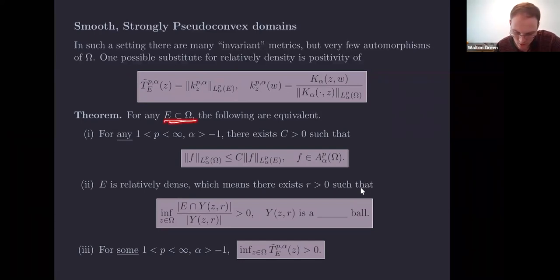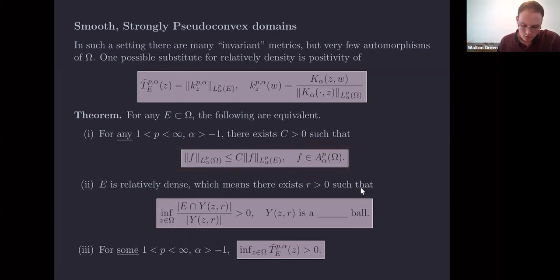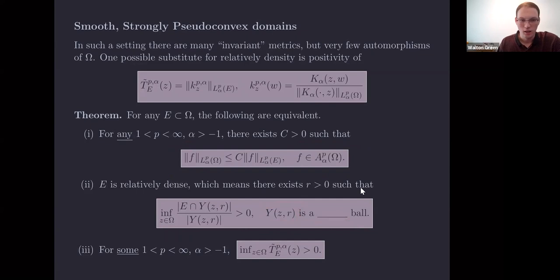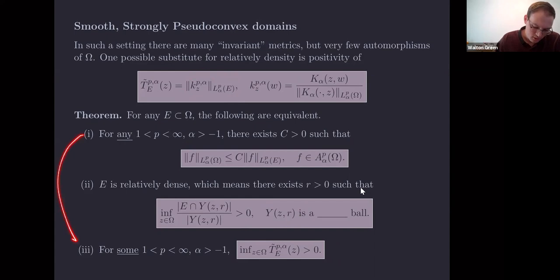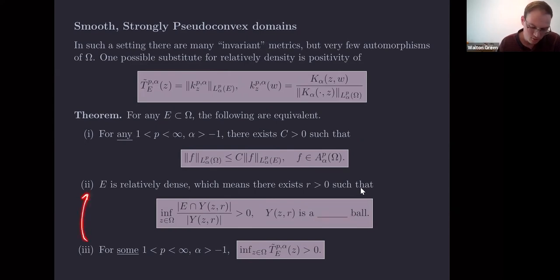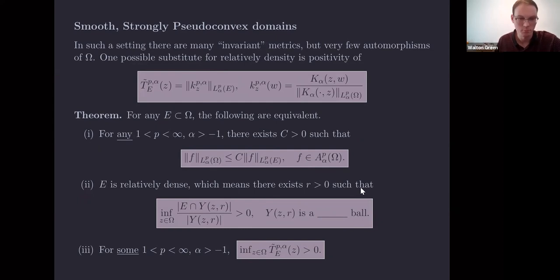Our main theorem characterizes dominating sets: for any E in Omega, the following are equivalent. Condition one: E is a dominating set. Condition two: a density condition using balls in some metric we need to determine. Condition three: the testing condition on the reproducing kernels K_z. Clearly one implies three. We need to find the right metric so that three implies two and two implies one.